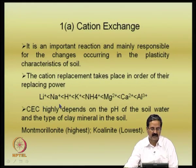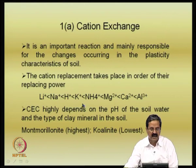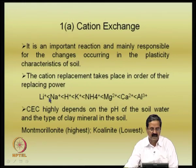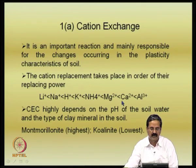The replacement order goes from lithium, sodium, and hydrogen — these are all single valence ions — and as you have a higher valence material, it replaces the lower valence ions. For example, these three are single valence, and if you have divalent ions, there is a possibility they get replaced by higher valence ions, and if you have aluminum, it definitely replaces calcium. This is also a function of ionic radius.